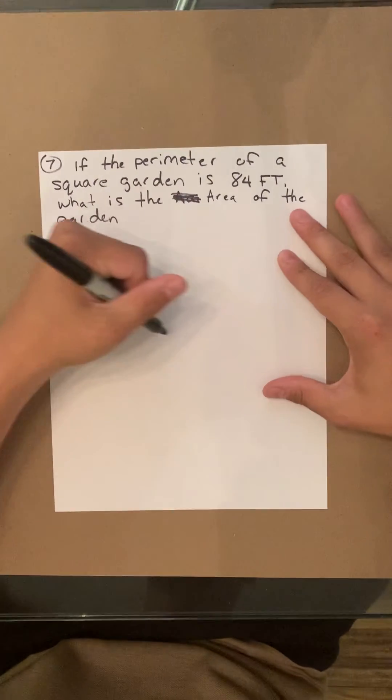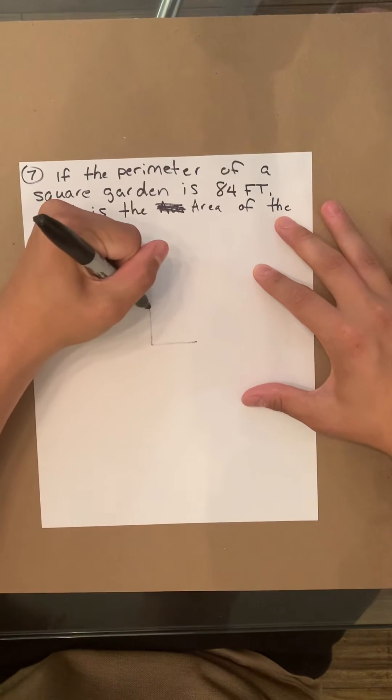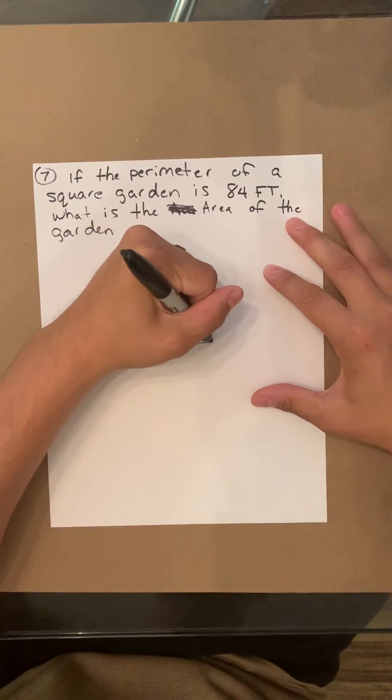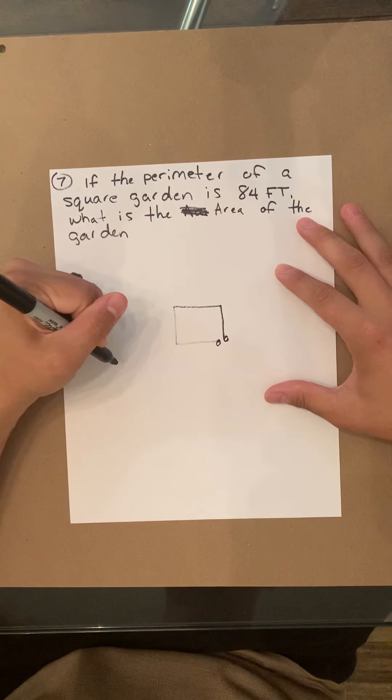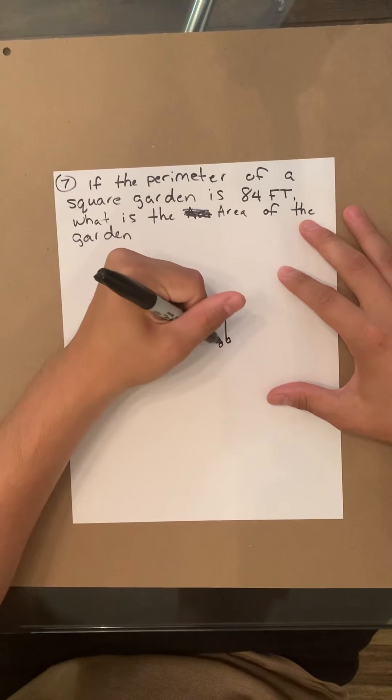So first off, so you understand what is what, notice how I'm making a square right now. This is the starting point of the square. This is the ending point of a square.